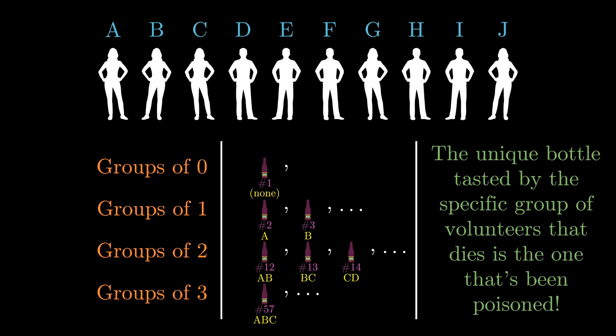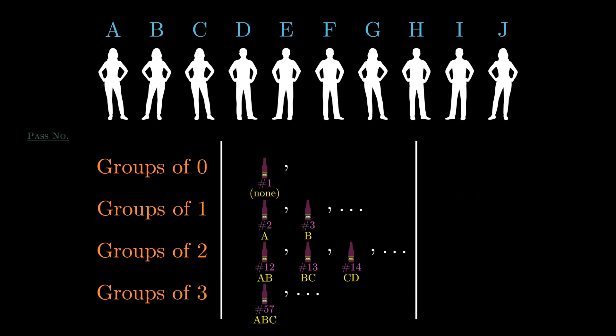And the way you would prove that this approach actually works is using combinatorics. Every time you test a bottle, you pass over the 10 volunteers, as it were, picking tasters in groups of 0, 1, 2, 3, and so on. This means that with, maybe let's call it the 0th pass, you cover as many bottles as a number of ways to choose 0 people out of 10, that is, 10 choose 0. Then on the next pass, you cover as many bottles as a number of ways to choose 1 person out of 10, that is, 10 choose 1.